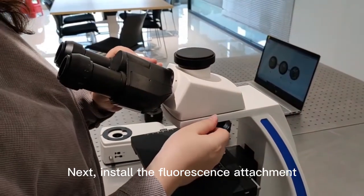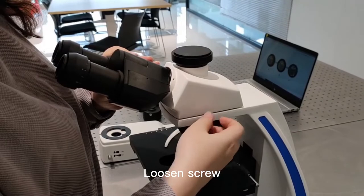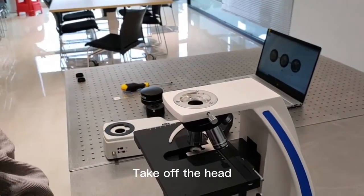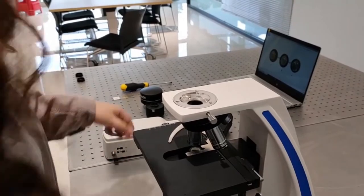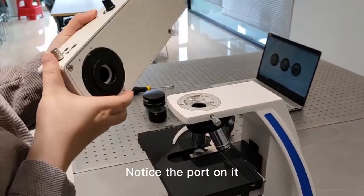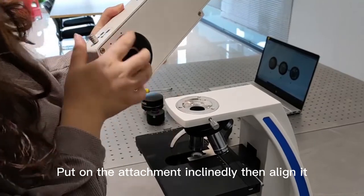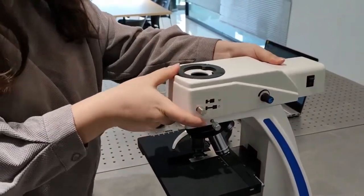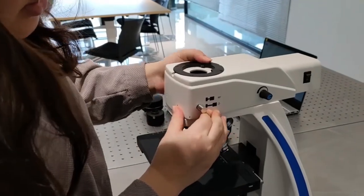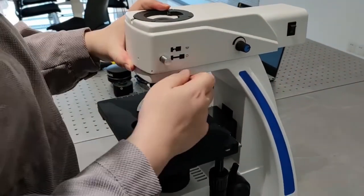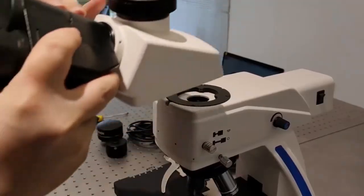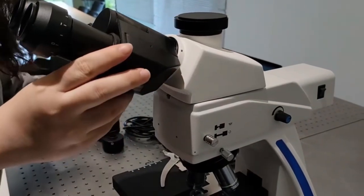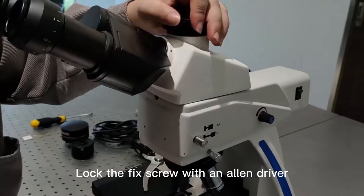Next, install the fluorescence attachment. Loosen the screw. Take off the head. Notice the port on it. Put on the attachment inclinedly, then align it. Lock the screw. Then put the head back and align. Lock the fixed screw with an Allen wrench.